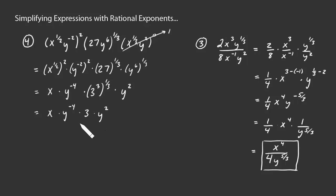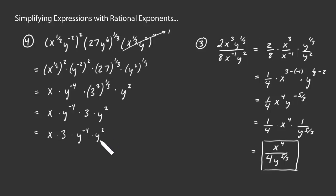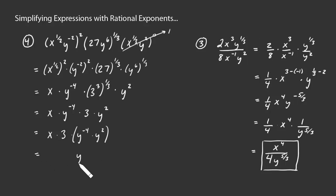We can do even more — notice we have y to the negative fourth and y squared, and everything is being multiplied together. Re-arranging using the commutative property, we place y to the negative fourth and y squared next to one another. We can add those exponents since it's a product of two powers with the same base: negative 4 plus 2 is negative 2. We've still got a 3 and an x. We want to avoid leaving negative powers in our final answer.